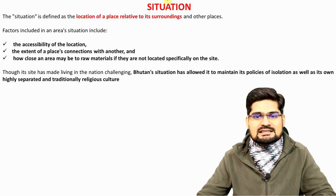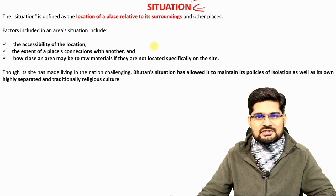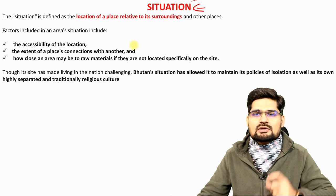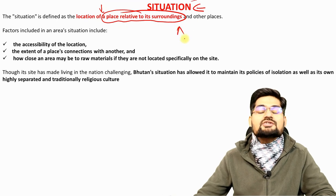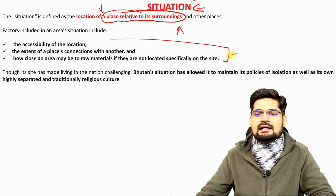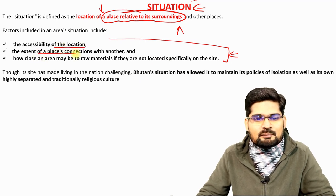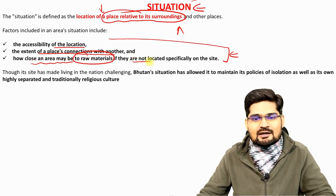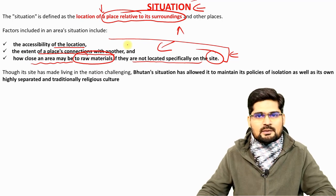Then comes the other concept: situation. Situation is always about relative location — a place relative to its surroundings, how it is located in relation to other places. It's a relative term. Key words for understanding the situation of a settlement include accessibility, the extent of a place's connections with others, and how close an area may be to raw materials not located directly on the site.